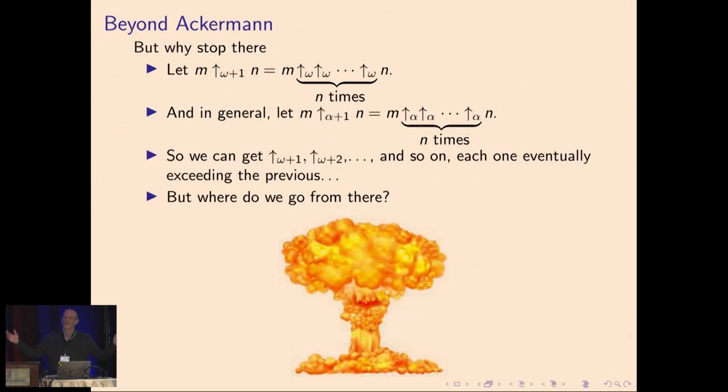But why stop there? We can extend beyond that. We can iterate Ackermann's function. We can have ω + 1. In fact, for any arrow sub α, we can iterate it and have arrow sub α + 1. So we can get ω + 2 and ω + 3, et cetera.